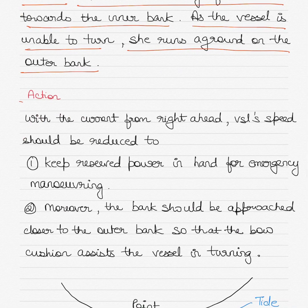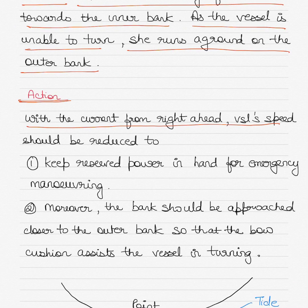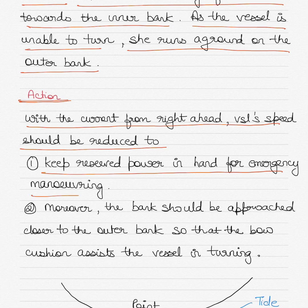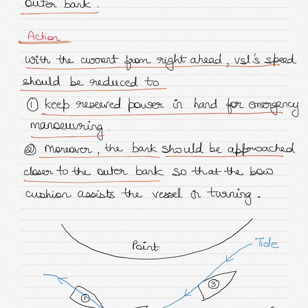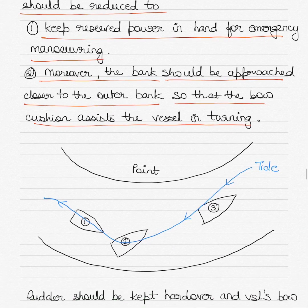With the current from right ahead, the vessel's speed should be reduced to keep reserve power in hand for emergency maneuvering. Moreover, the bend should be approached closer to the outer bank so that the bow cushion assists the vessel in turning.